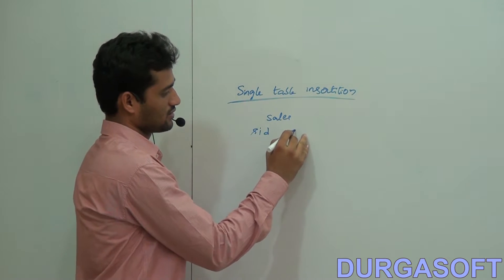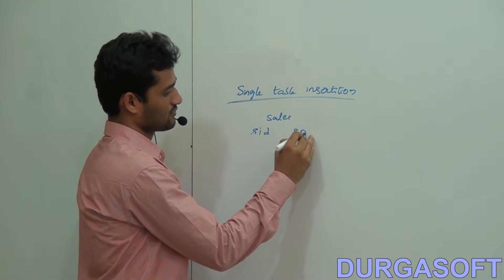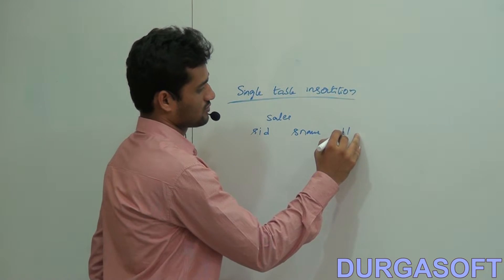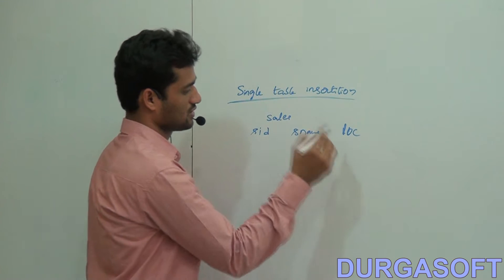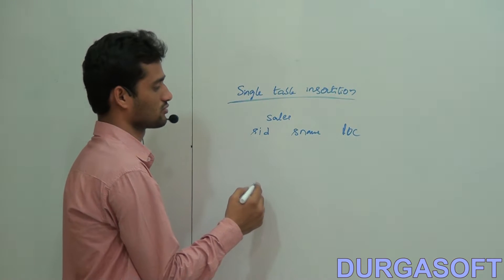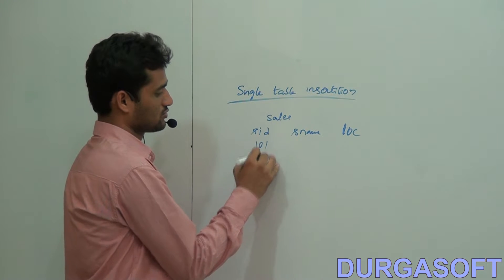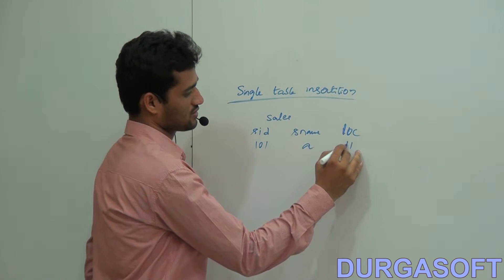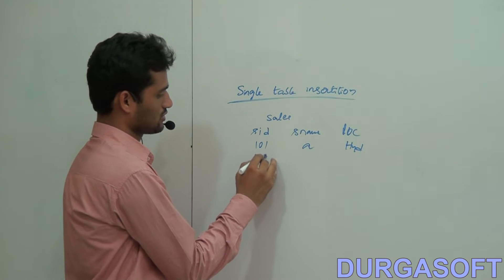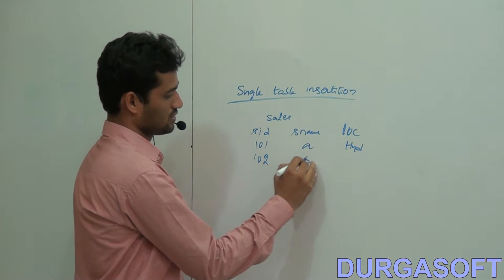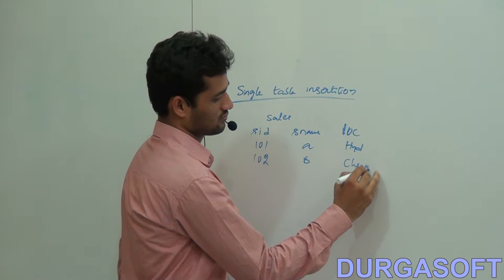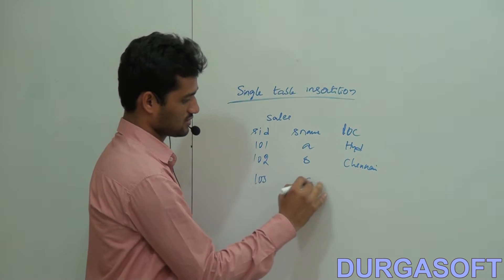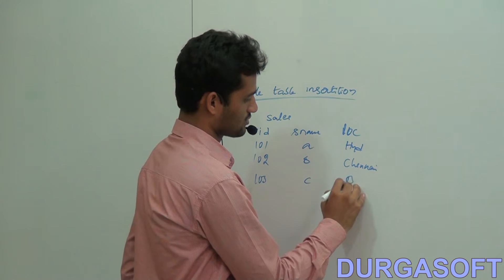The sales table has a salesperson's ID, salesperson's name, and location — the city where he's selling goods. For example: 101, A, Hyderabad; 102, B, Chennai; 103, C, Bangalore.